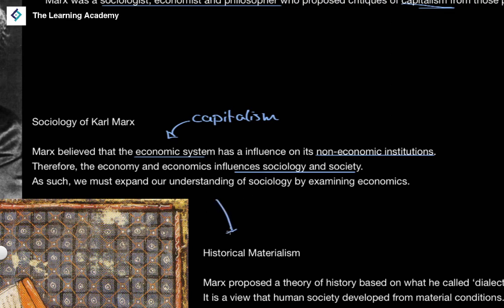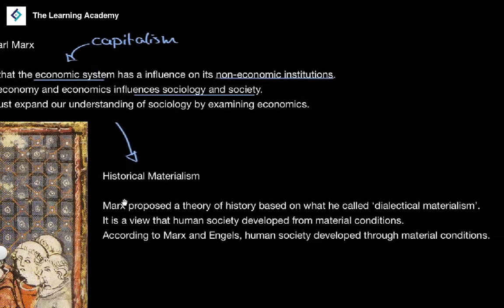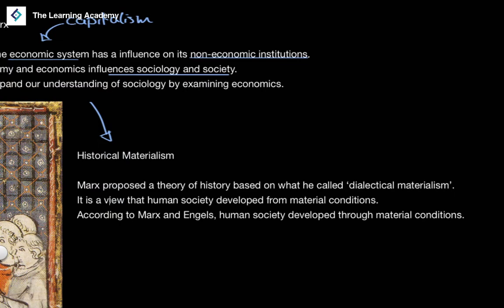One of the key features of Marxian theory is the theory of historical materialism or dialectical materialism. This is a theory of how history develops, also known as a historiographical theory. It was a view of human society based on material and technological conditions. According to Marx and Friedrich Engels, who worked with Marx and published a lot of his works, human society developed through these material conditions.